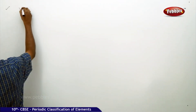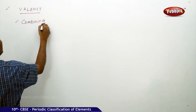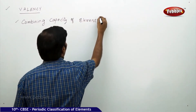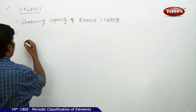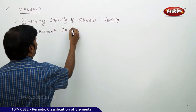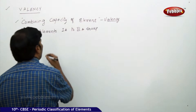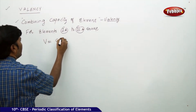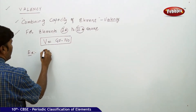The combining capacity of an element is simply called valency. Valency can be calculated using group number. For elements from group 1A to 4A, valency is equal to the group number.